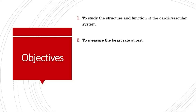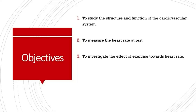The second objective is to measure the heart rate at rest. Heart rate is the number of heartbeats per minute. The next objective is to investigate the effect of exercise on heart rate — specifically, whether the heart rate increases or decreases during exercise.